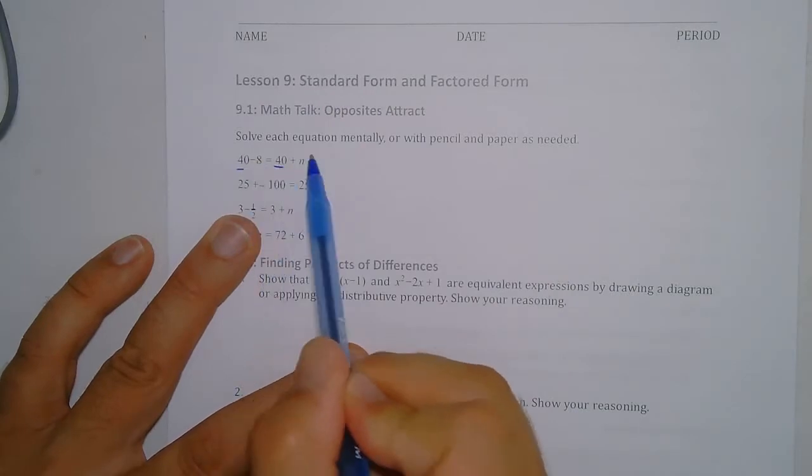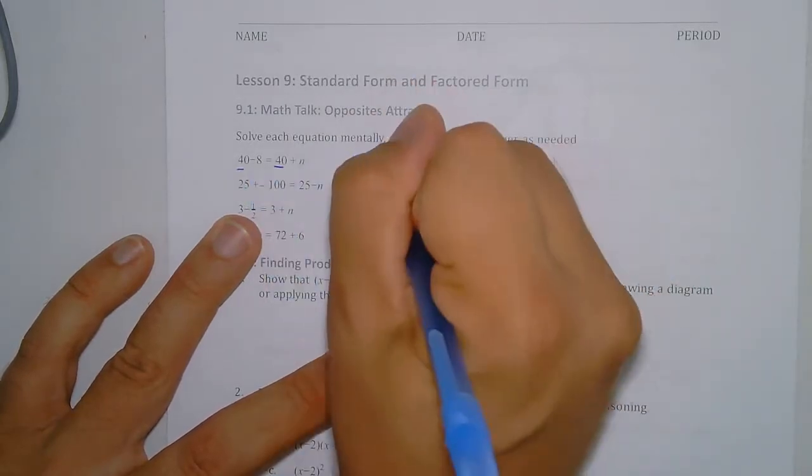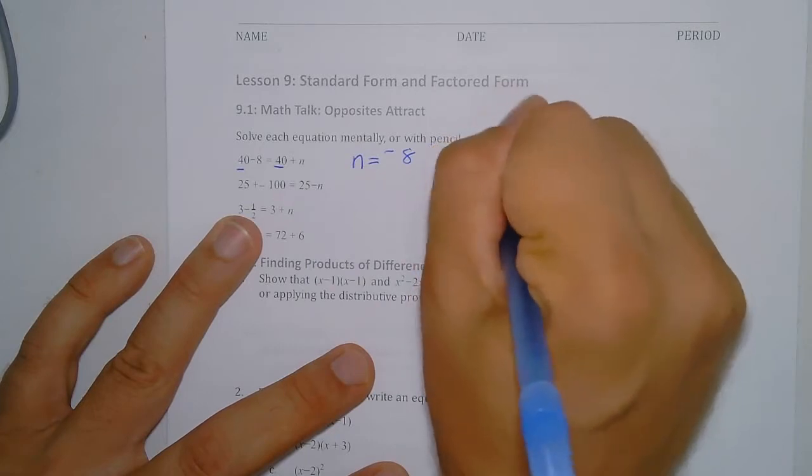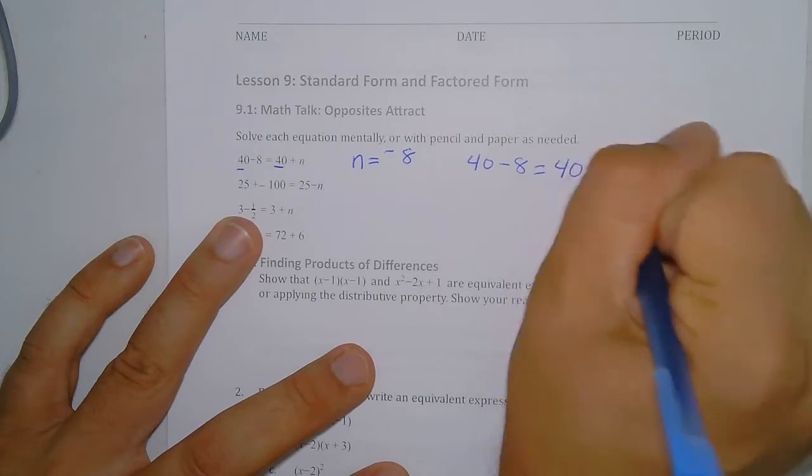So we can just say n would have to equal - and we don't say minus 8, you just say negative 8. So we could say 40 - 8 is equal to 40 + (-8). They're the same thing.